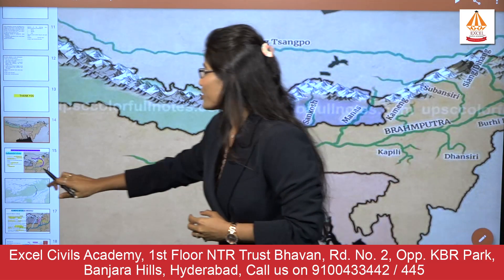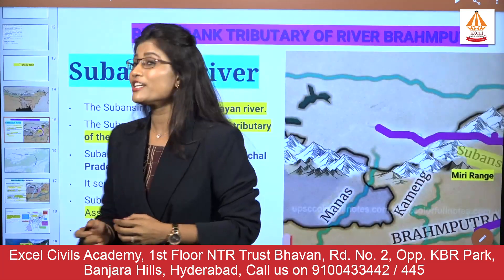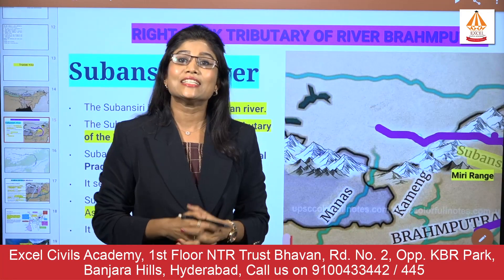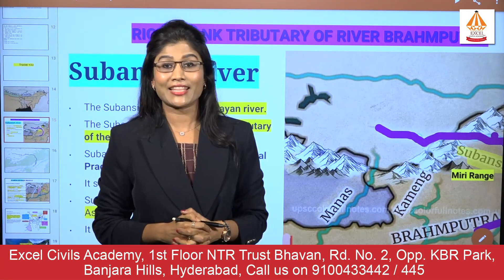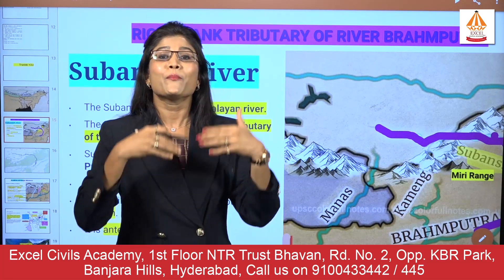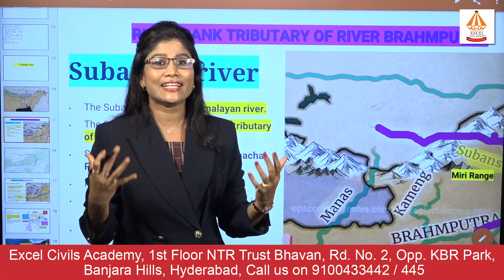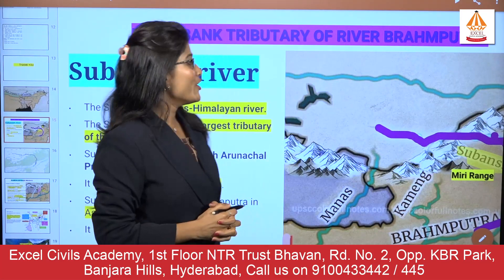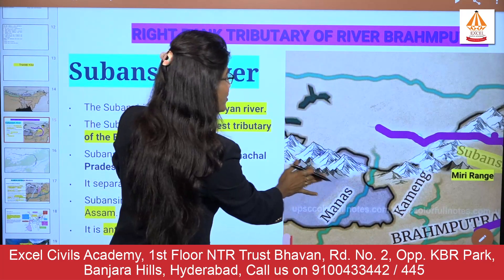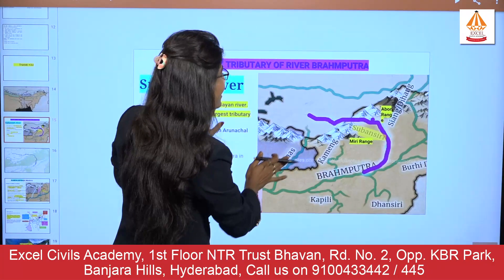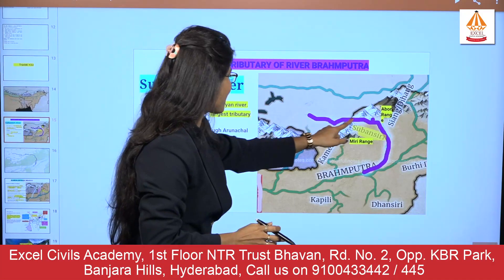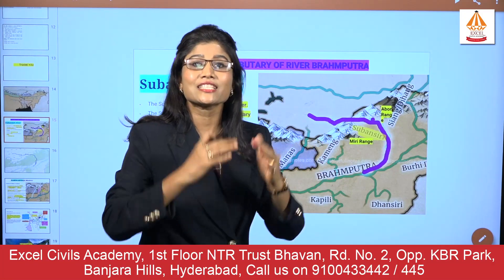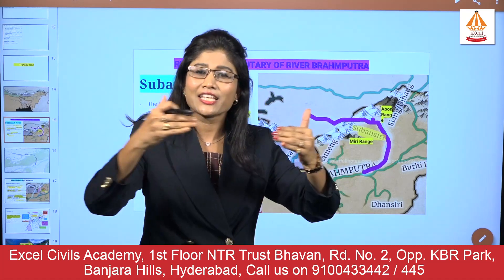The first river we are going to see is the Subansiri. River Subansiri is a transboundary river — that means it originates beyond India and beyond the Greater Himalaya. Basically it originates from the Tibetan Plateau. You can see this river Subansiri entering India by cutting through the mighty Himalayan ranges.